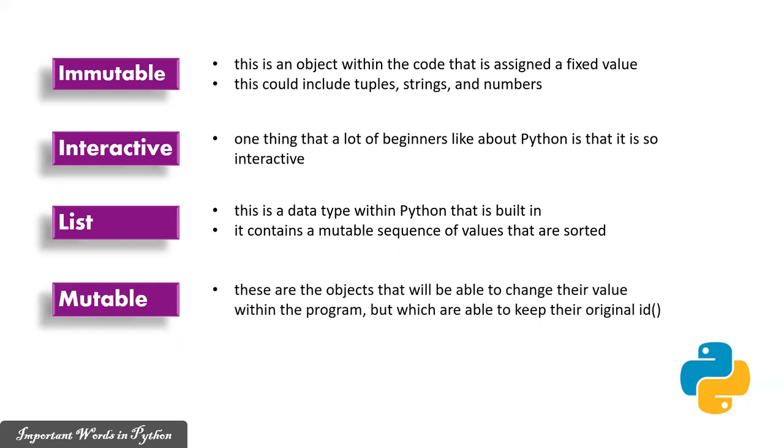Mutable: These are the objects that will be able to change their value within the program but which are able to keep their original ID. Let's move on to other important words in Python.